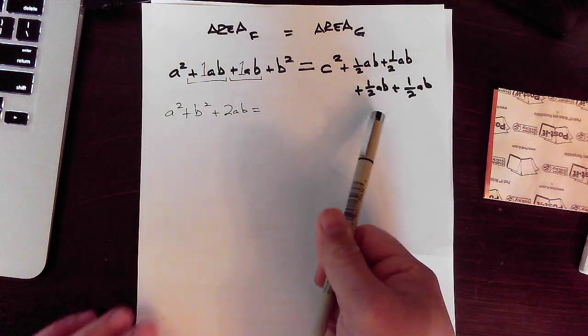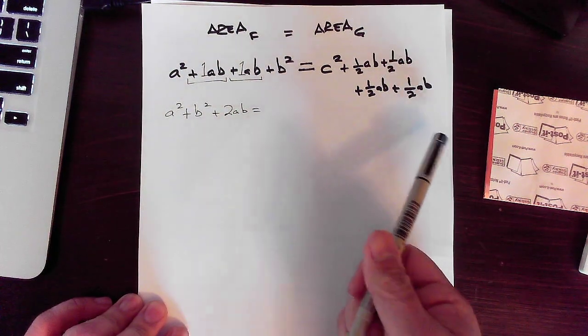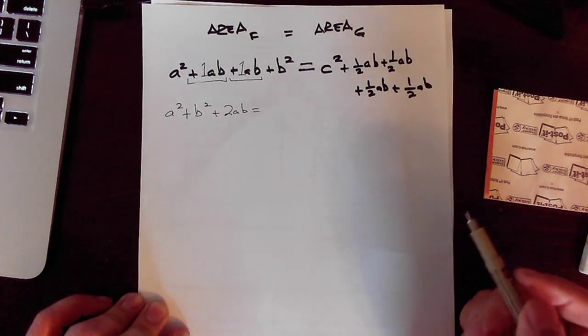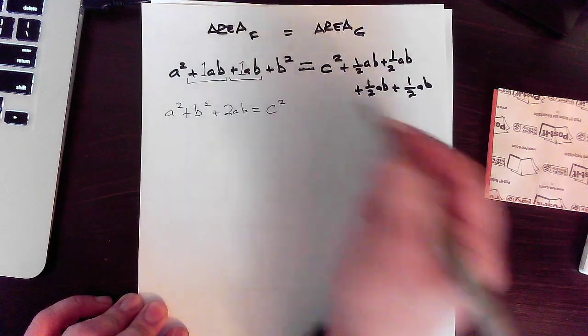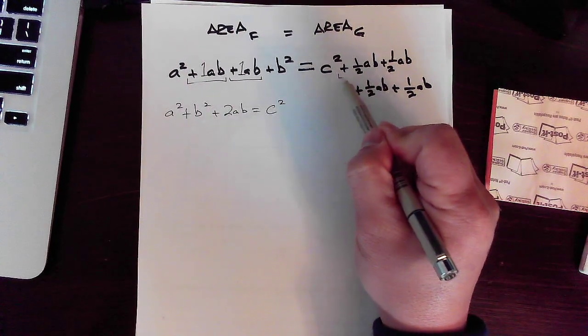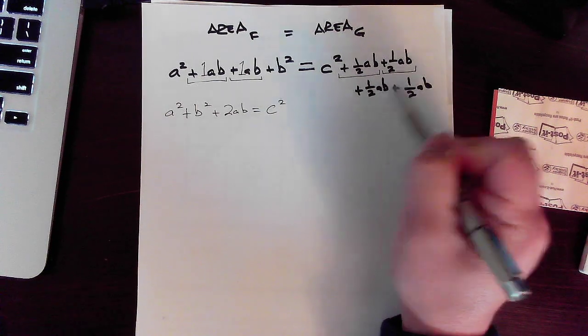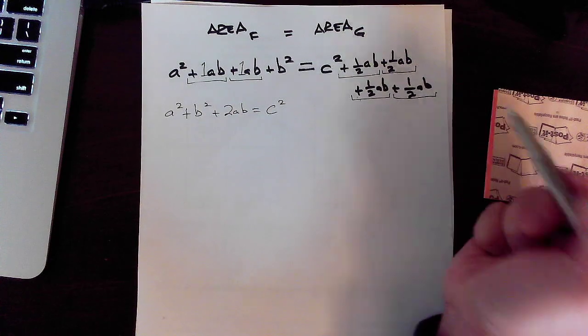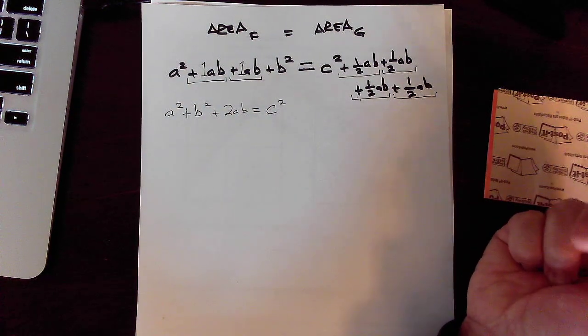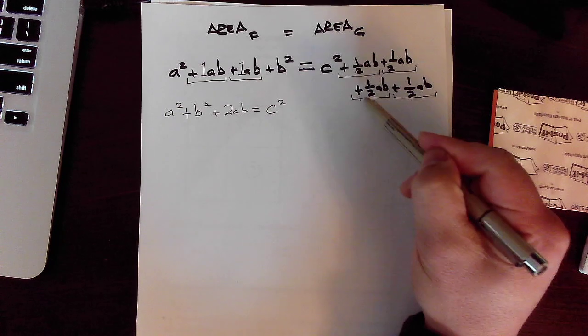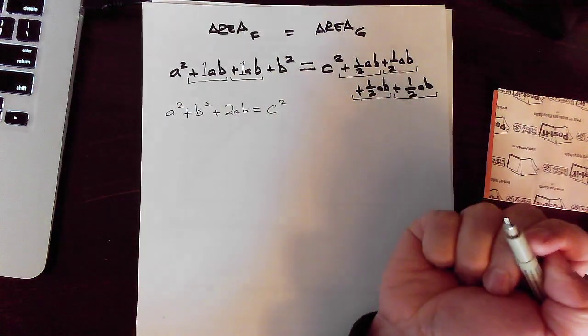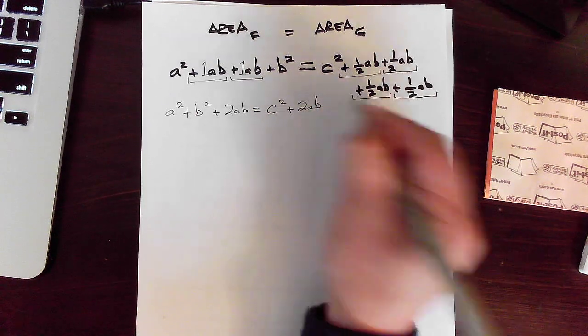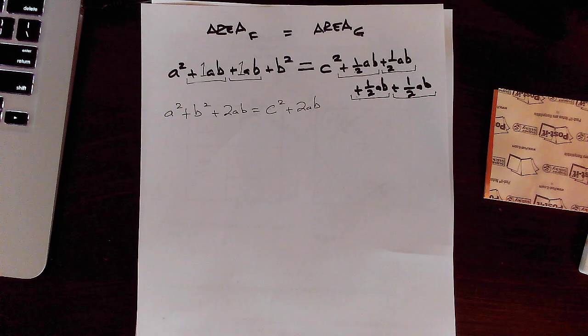And here on the right side of the equation. I should have all these equal signs lined up. Oh well. I'll do that next year. I'll have the C squared. And this one half AB plus another one half AB. Another one half. And another one half. That's four halves. That's one half plus one half plus one half plus one half is equal to 2. 2AB. Man. That's it.